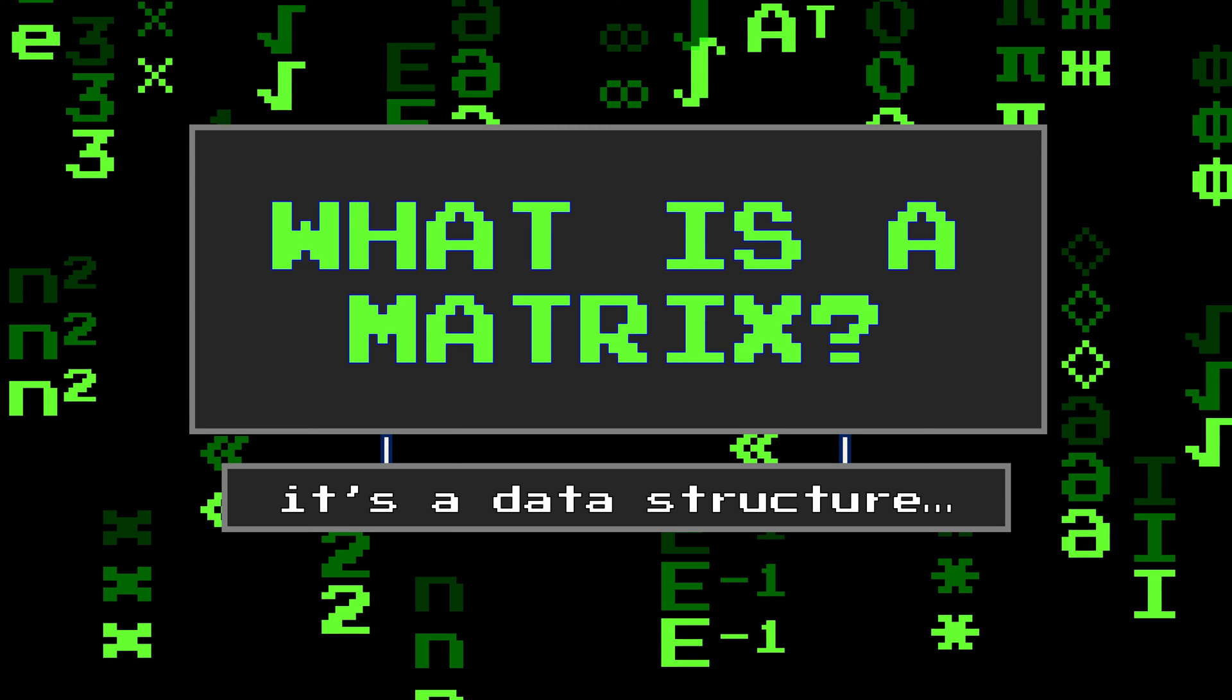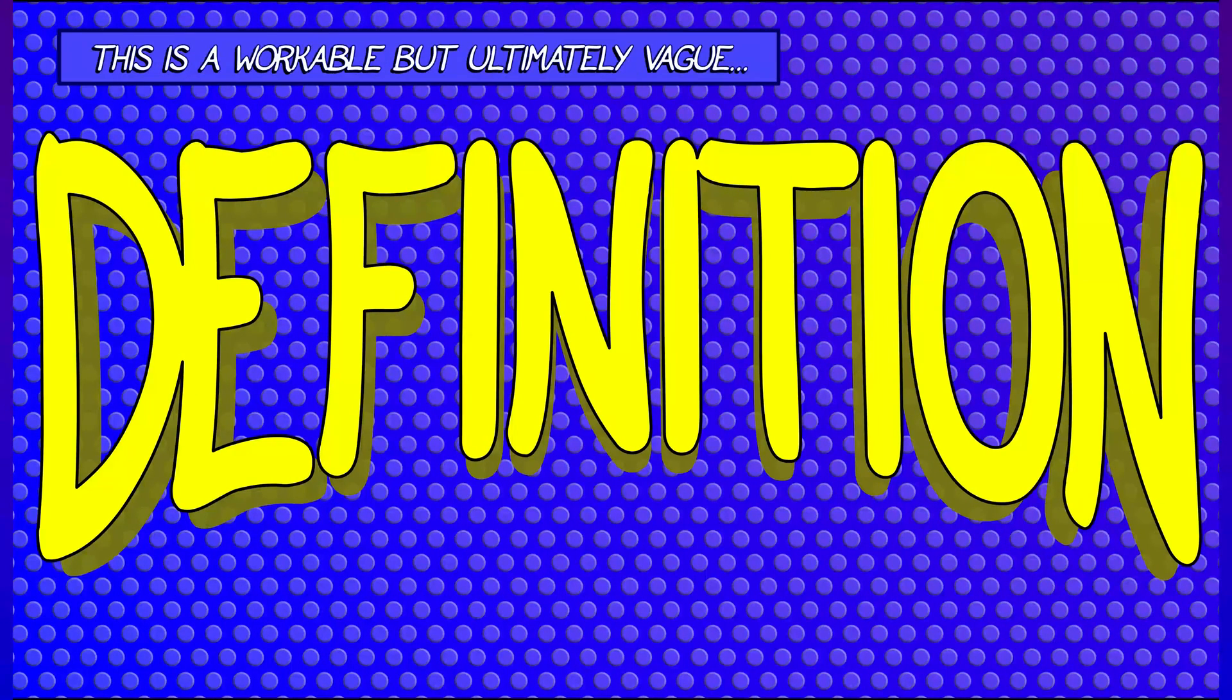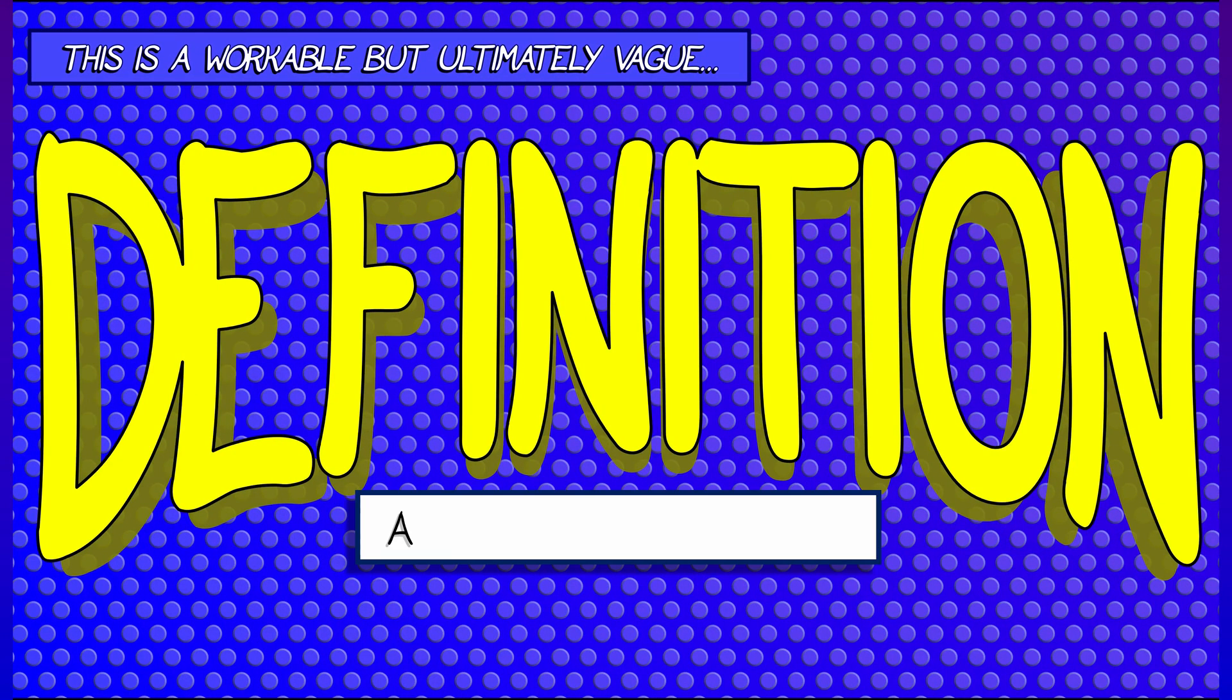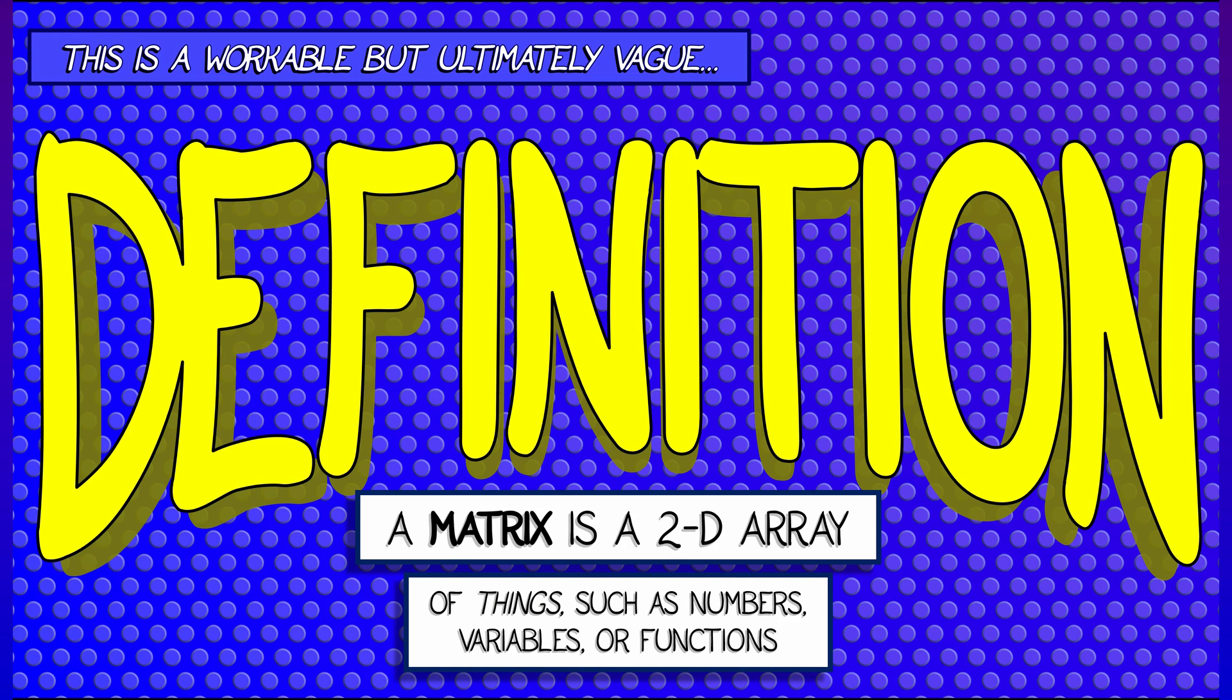Here's a definition, it's a little bit vague, but it'll get the job done. A matrix is really a two-dimensional array of things, such as numbers, variables, functions, something like that.